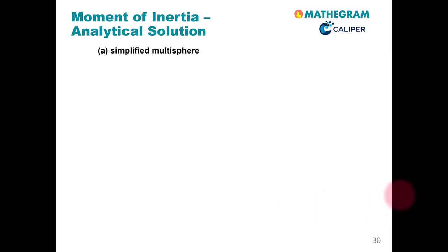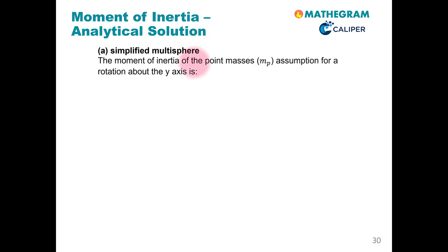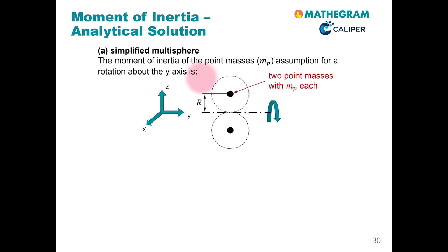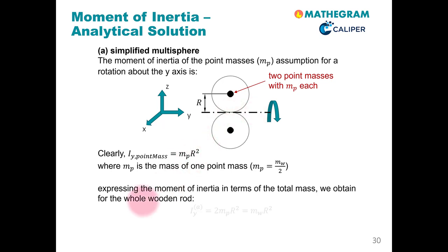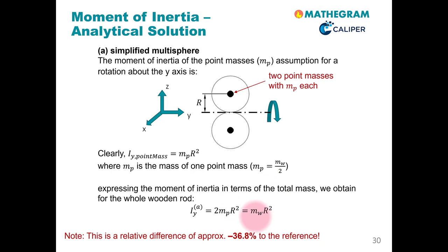Let us now move on to the simplified multisphere case. The moment of inertia of point masses can be easily calculated based on the position relative to the axis. For this case, each of our point masses has a mass of mw divided by 2, half of the total mass of the particle. The moment of inertia of each point mass is simply its mass multiplied by the radial distance to the axis, which is r. Expressed in terms of the total mass, we arrive at 1 times mass r squared — much smaller than our reference of 1.58. So obviously the simplified multisphere assumption is not very realistic.